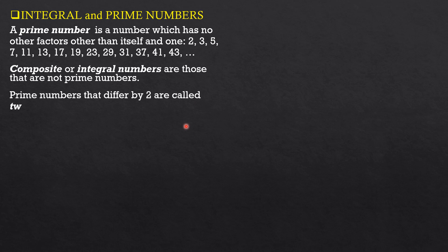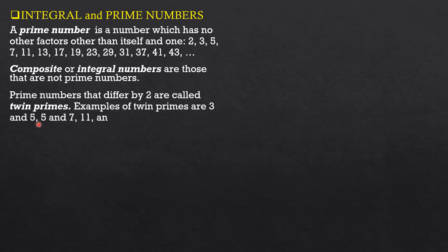Prime numbers that differ by 2 are called twin primes. Examples of twin primes are 3 and 5 — the difference between 3 and 5 is 2. Also 5 and 7, 11 and 13, 29 and 31, and so on and so forth. So prime numbers that differ only by 2 are called twin primes.